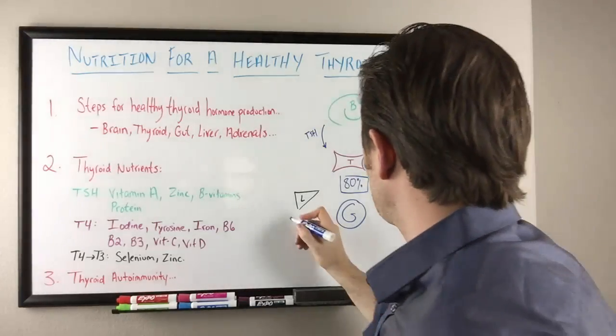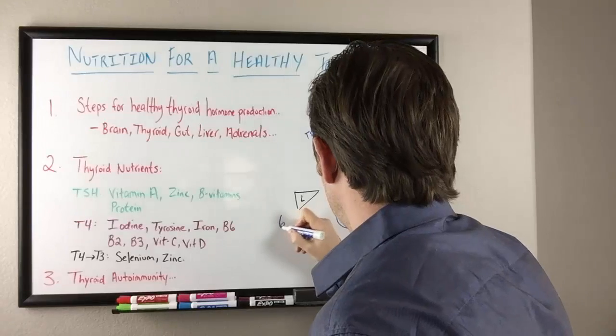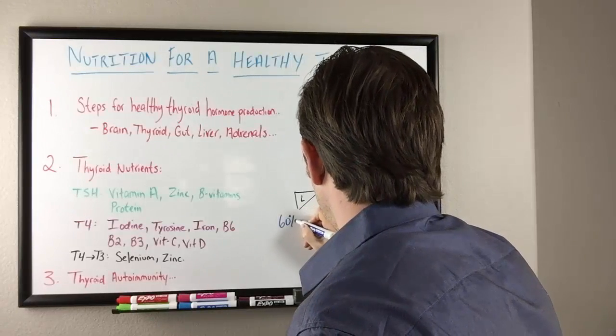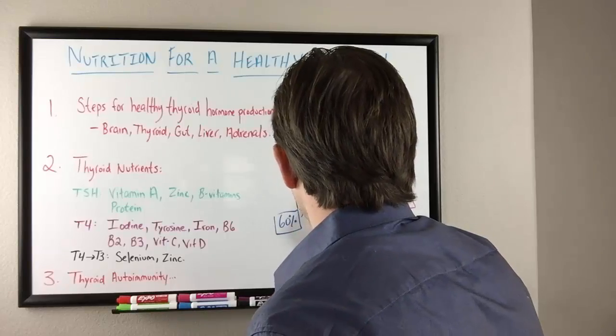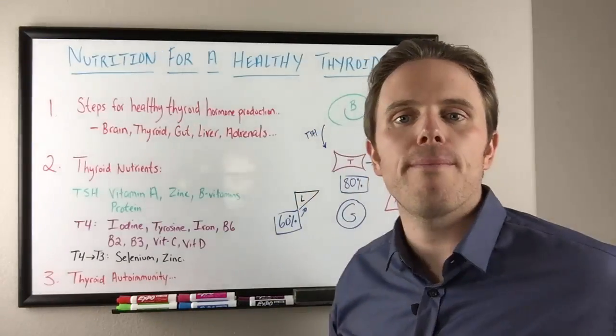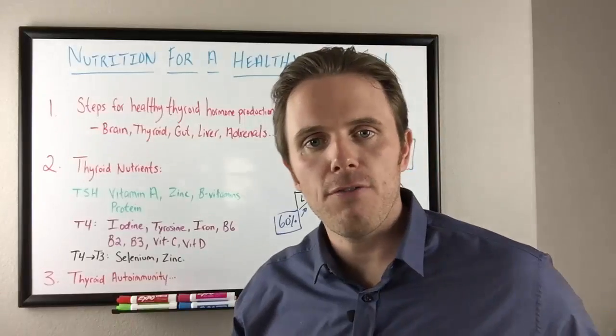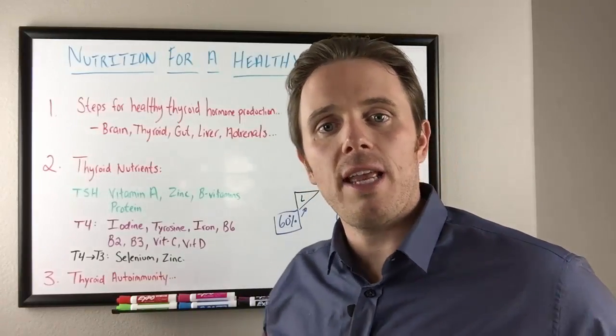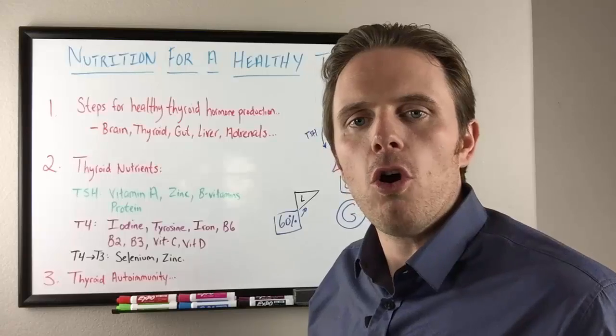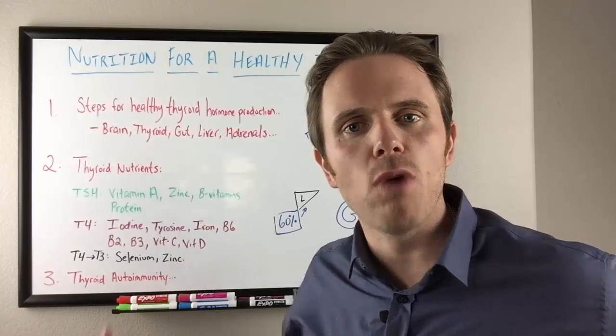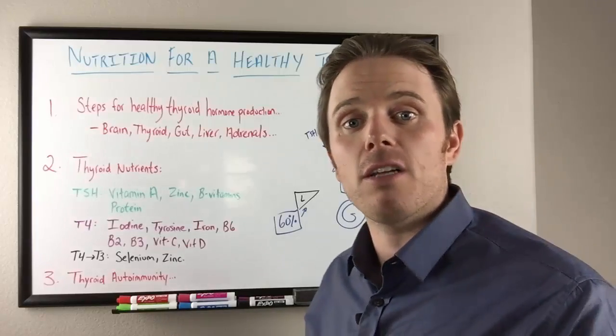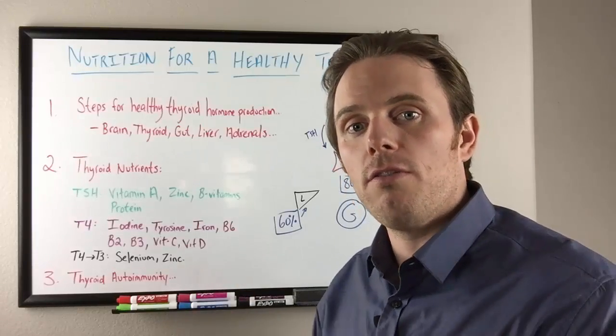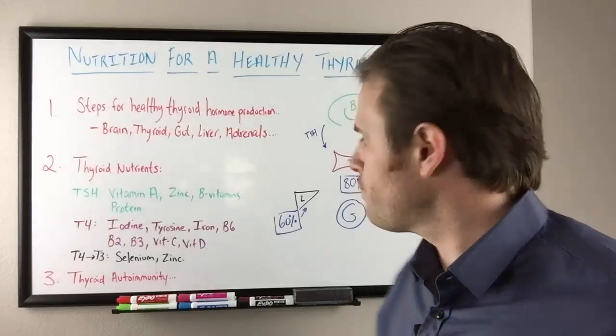So 60% of that 80 actually happens at the liver. Healthy liver function is very important. If we're getting toxins in our food, chemicals, various plastics, we're not getting enough sulfur based amino acids or antioxidants in our diet to run those pathways, our liver may be burdened and that may affect our body's ability to convert and activate thyroid hormone.